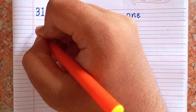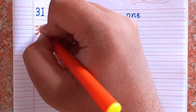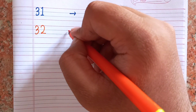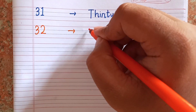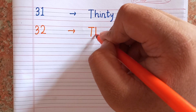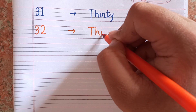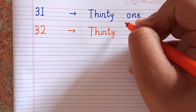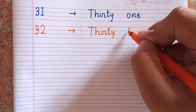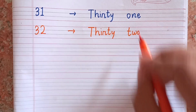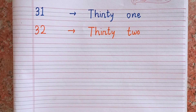After thirty-one, the next number is thirty-two — 3-2. The spelling of thirty-two is T-H-I-R-T-Y T-W-O. 32.